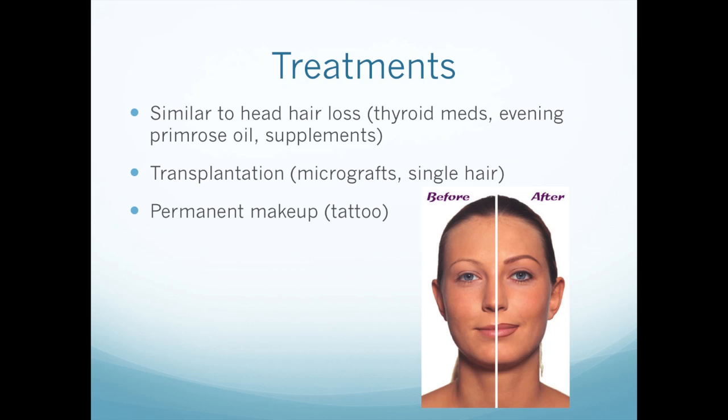Treatments are similar to those mentioned for head hair loss — normalizing your levels and being on medications. You can actually do transplantation for eyebrows, and that can be in the form of micrografts or single hair transplantations — both have been done. There's also permanent makeup, as shown in this picture here. Obviously she's had more than just brow makeup, but a tattoo is certainly an option for really thinned eyebrows.